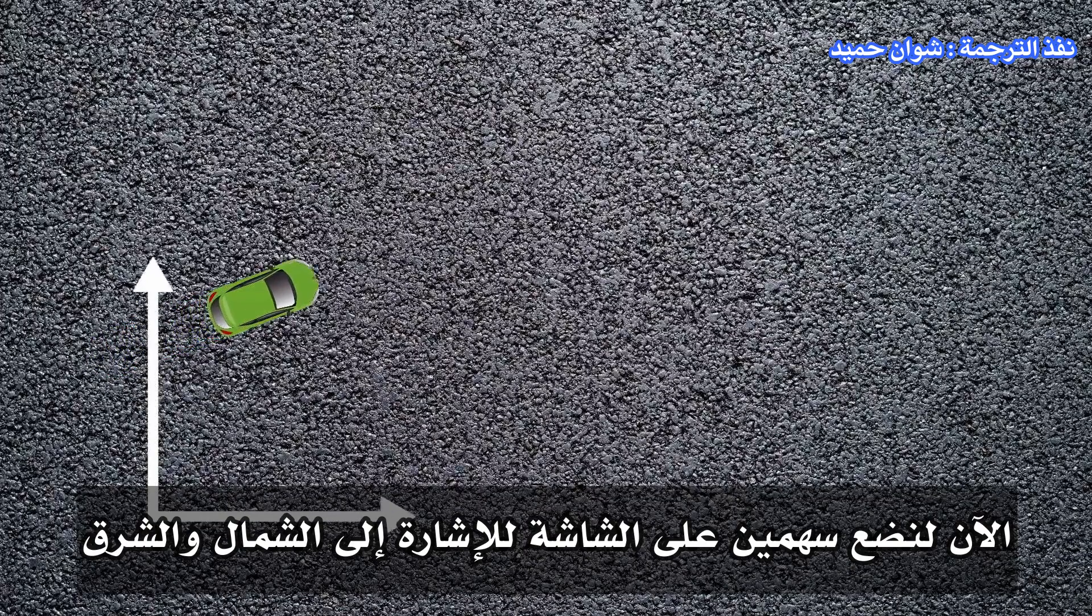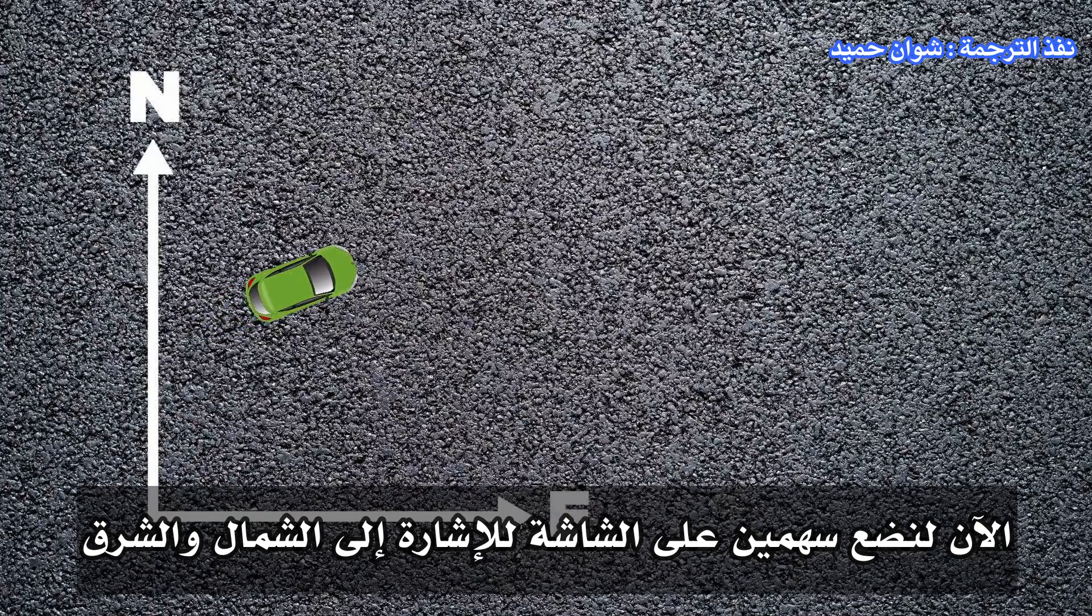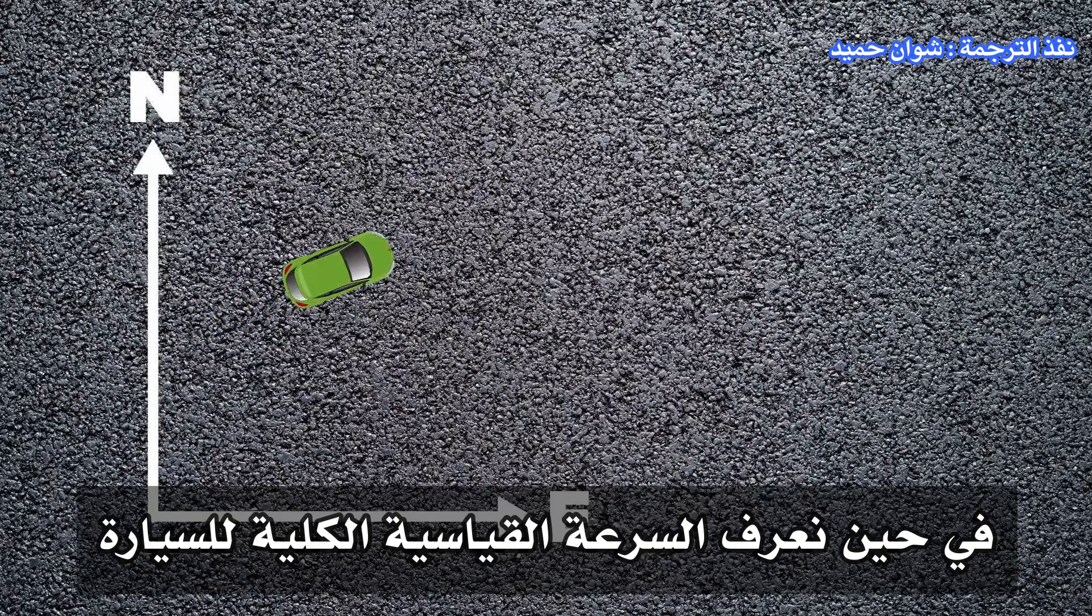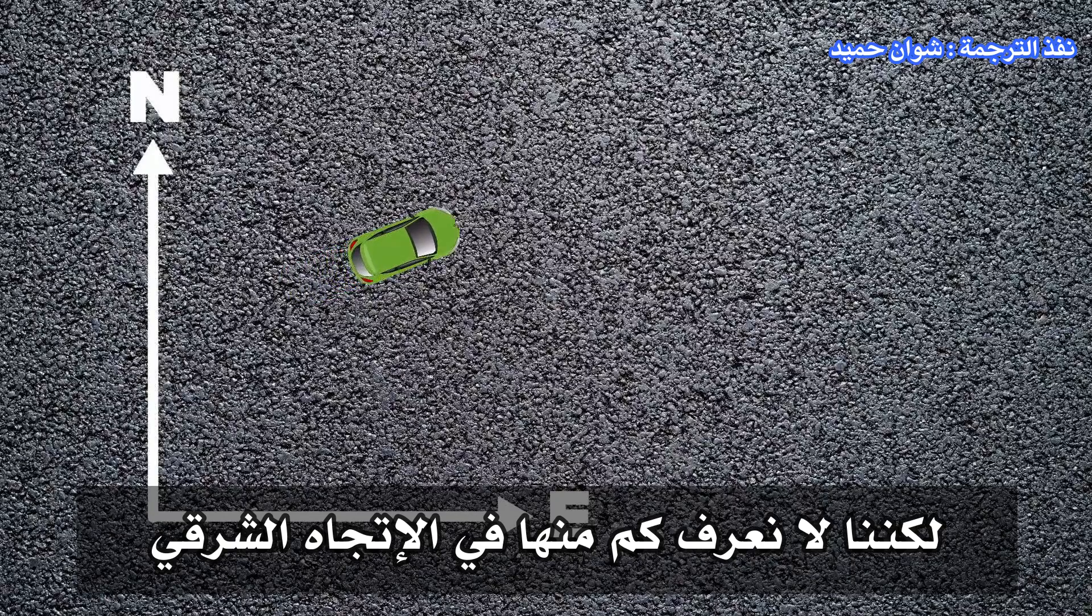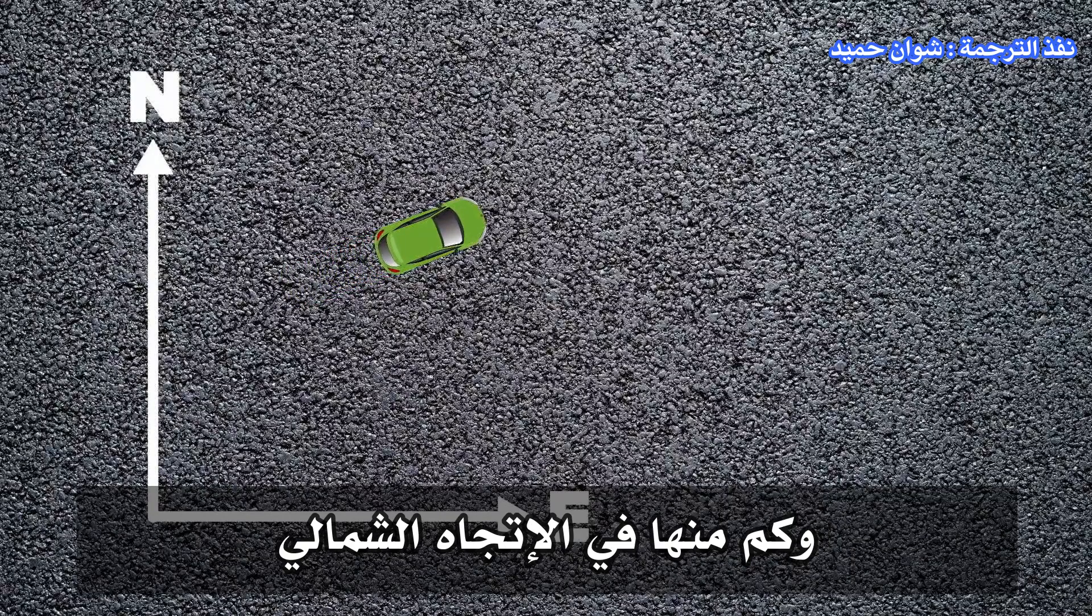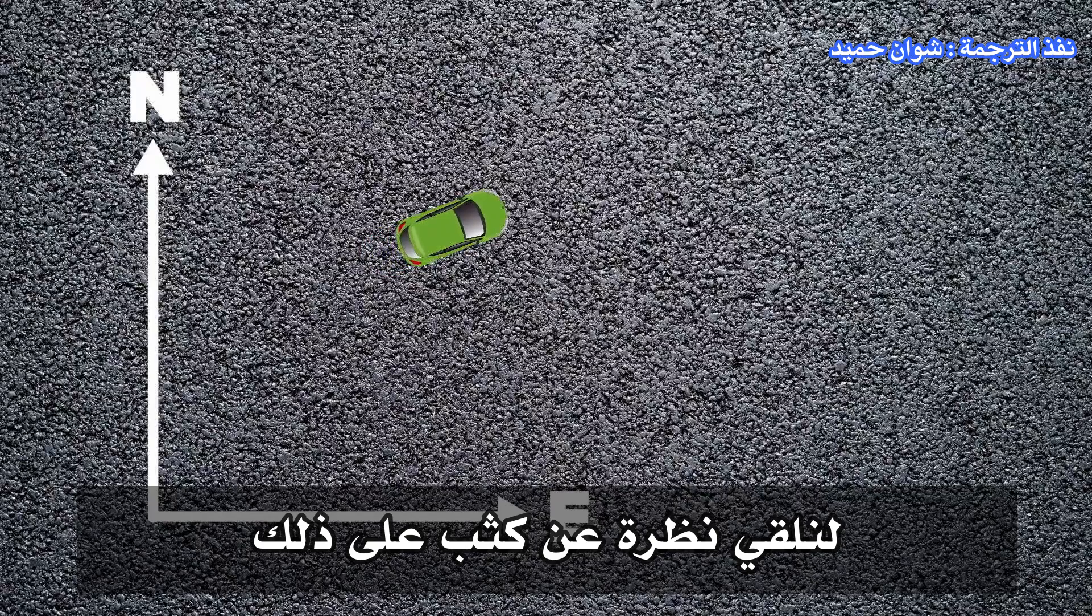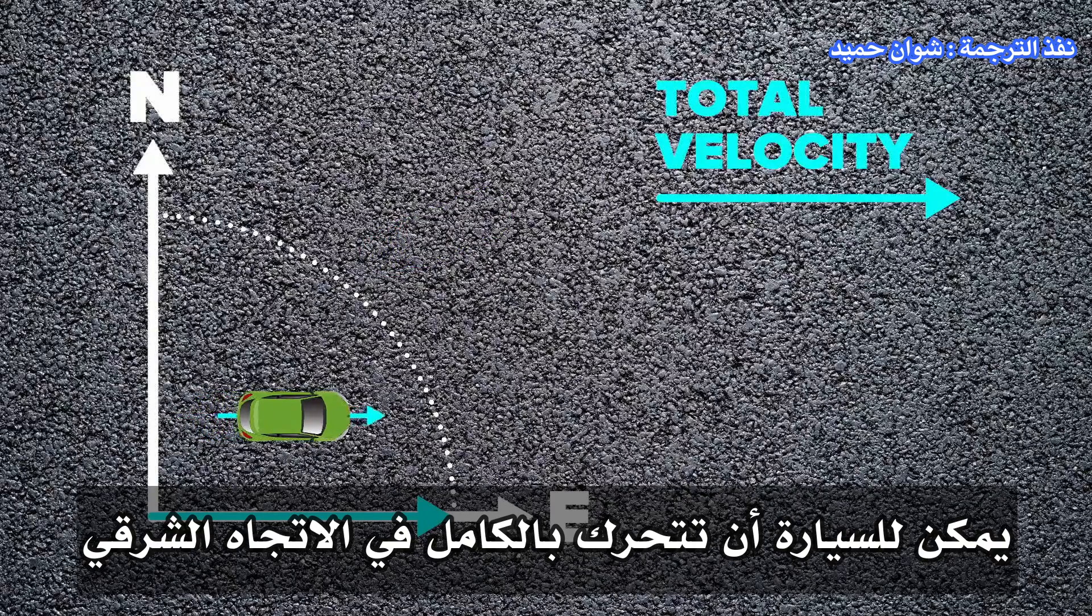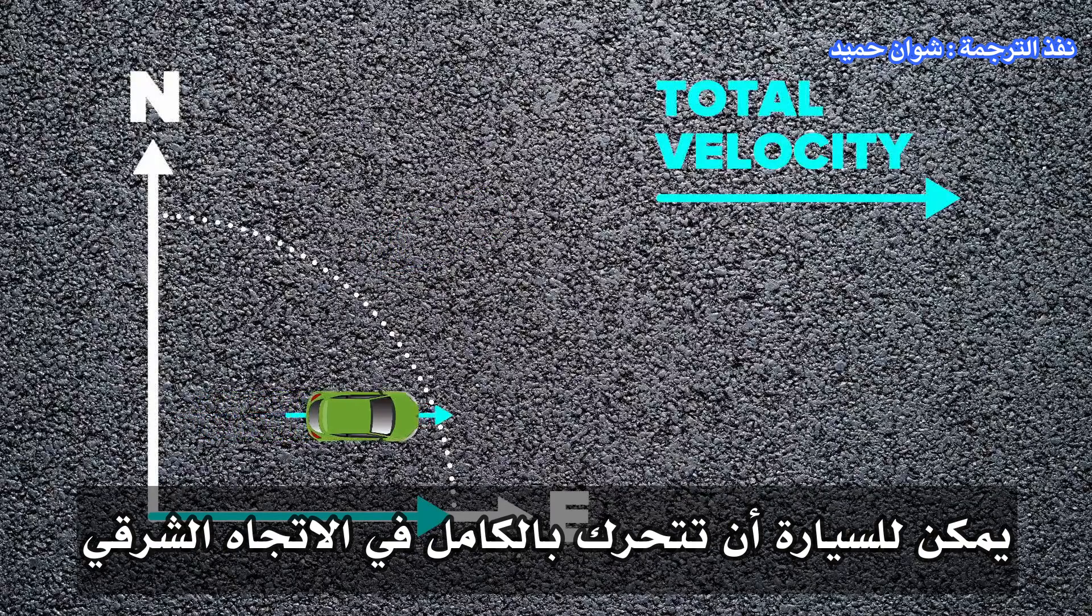Now let's put a couple of arrows on the screen to point out north and east. While we know the overall speed the car is going, we don't know how much of it is in the east direction and how much is in the north direction.